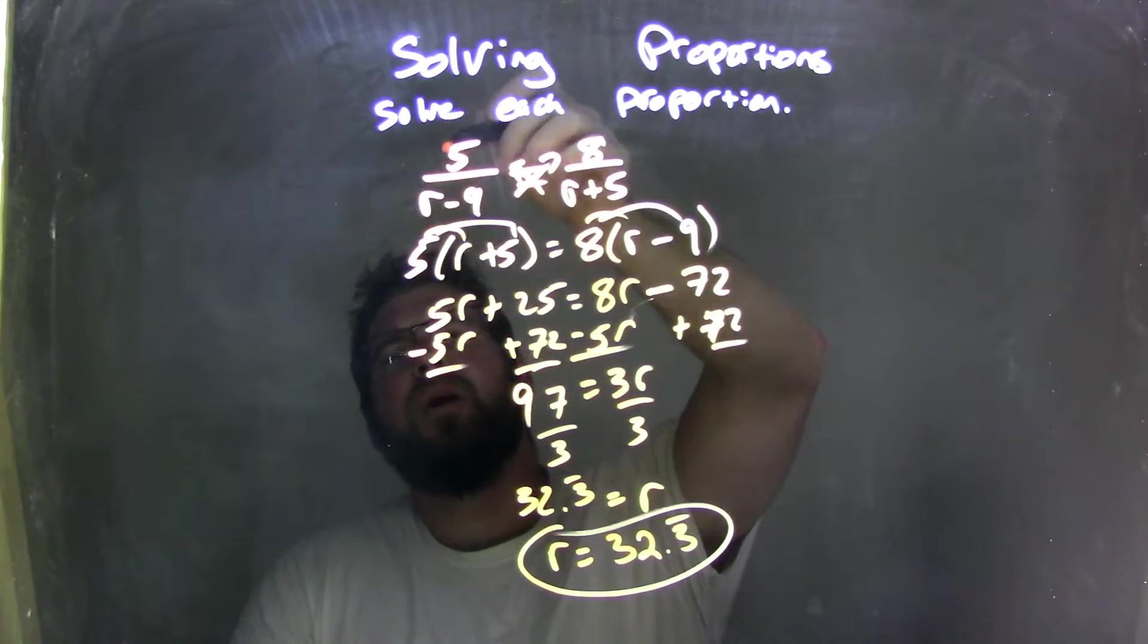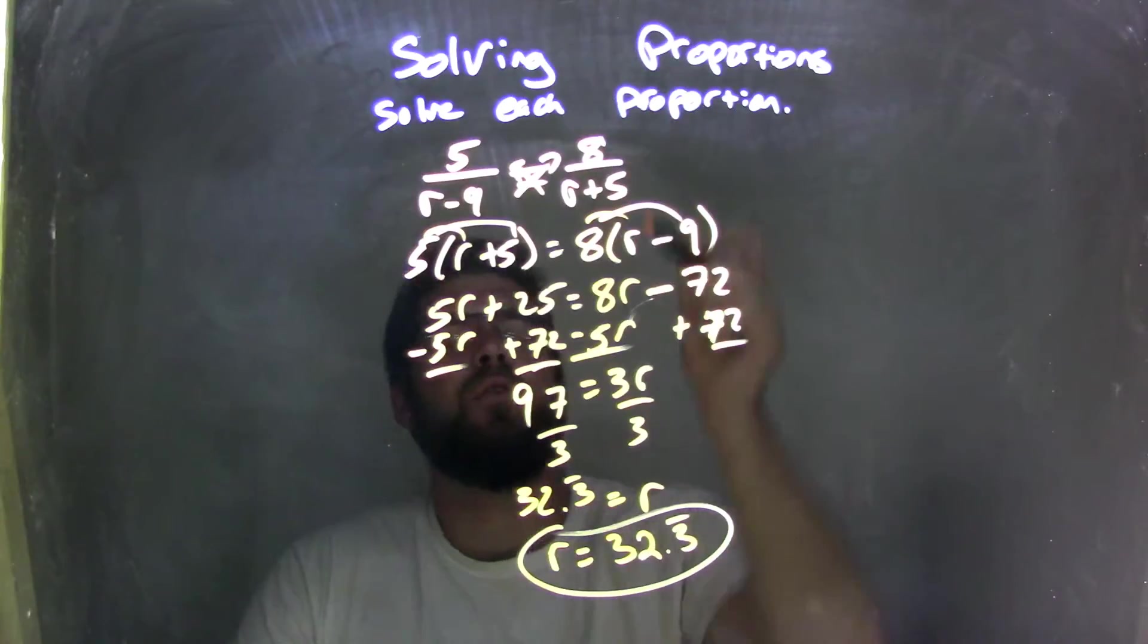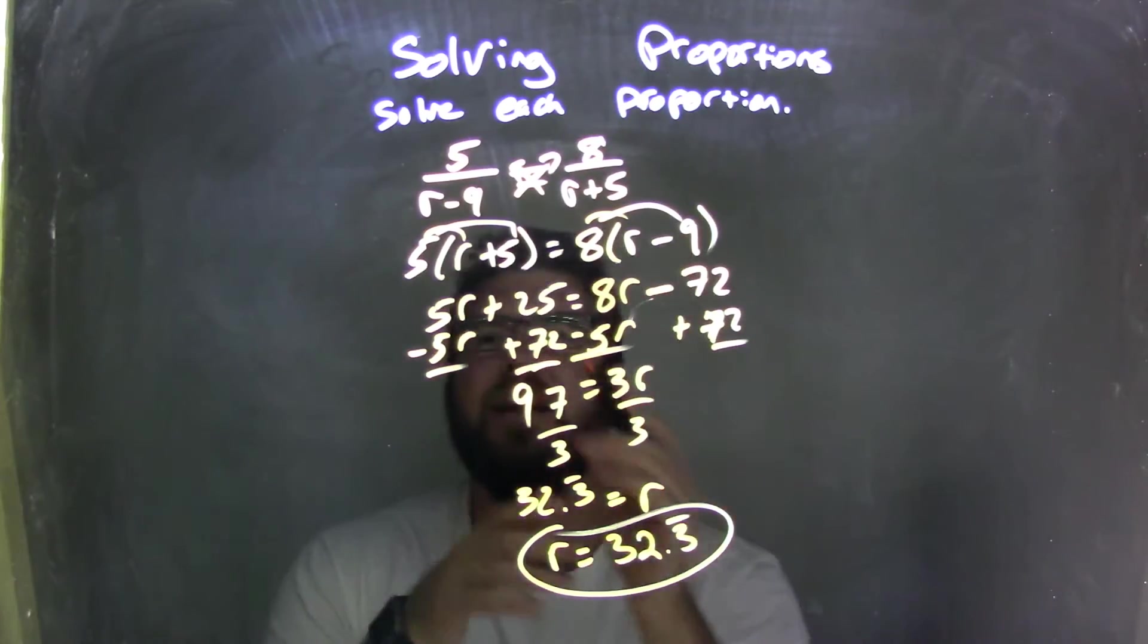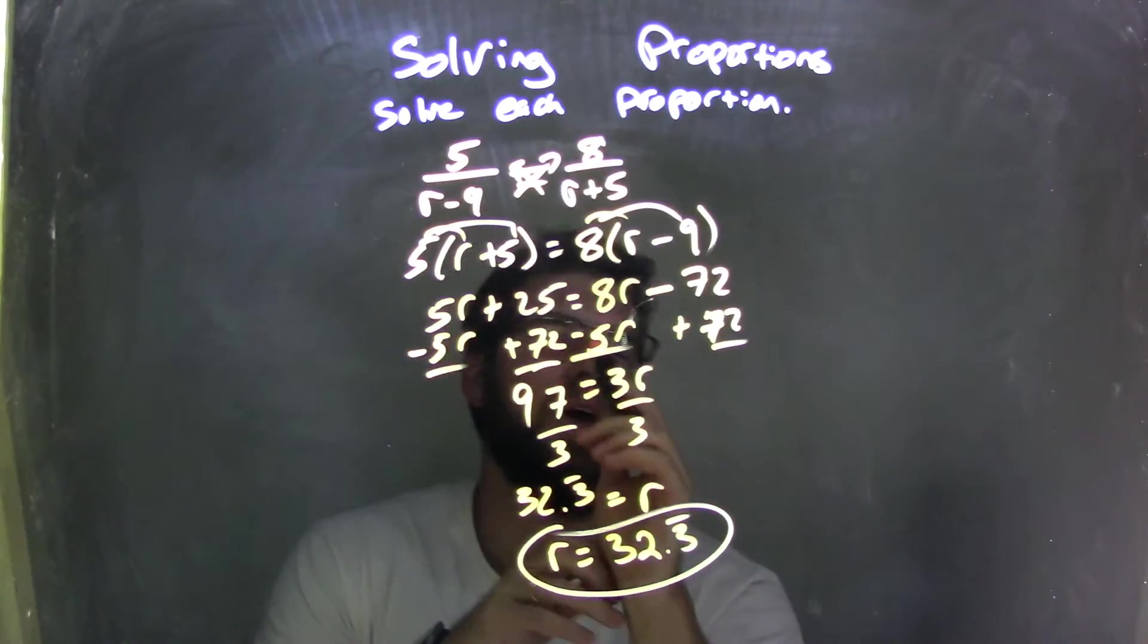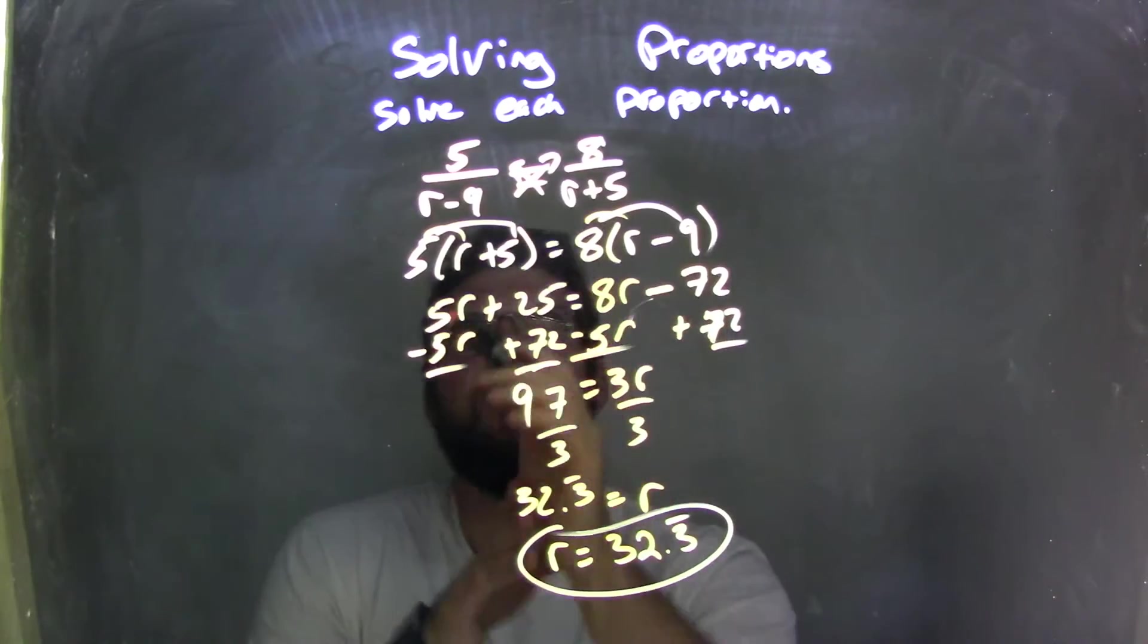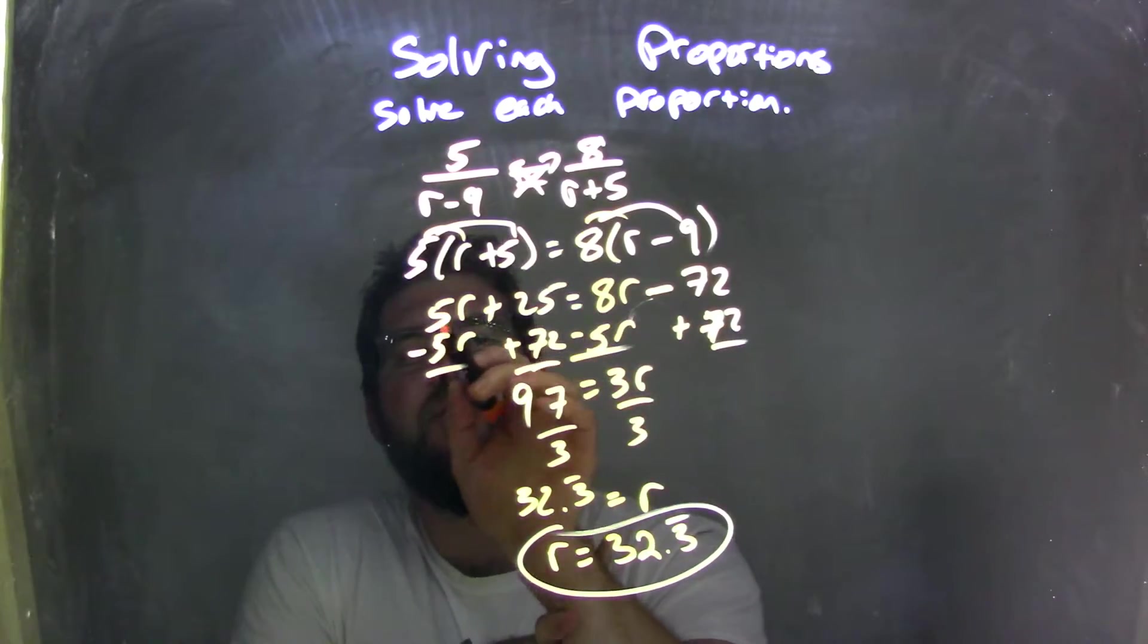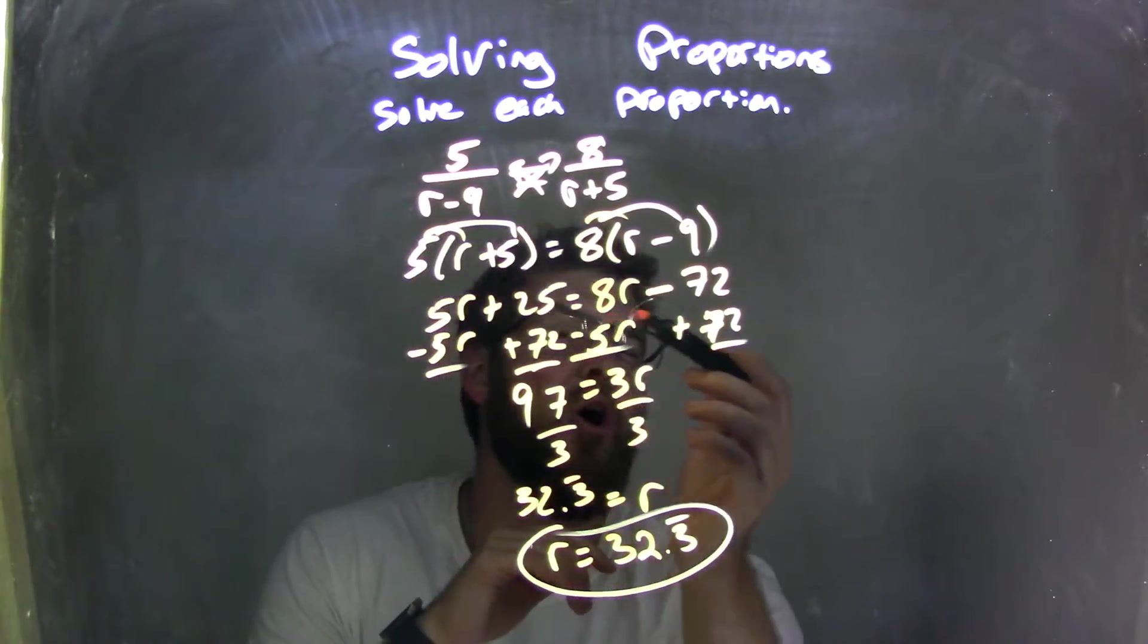So let's recap. We started with 5 over r minus 9 equals 8 over r plus 5. Cross multiply, giving me 5 times r plus 5 equals 8 times r minus 9. Distributed, gave me 5r plus 25 equals 8r minus 72.